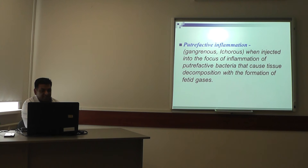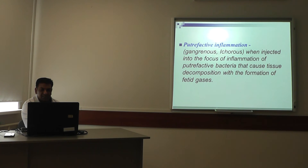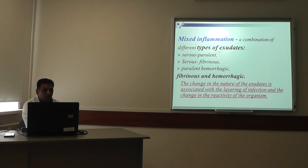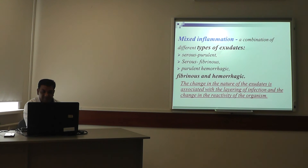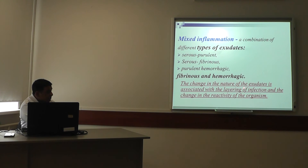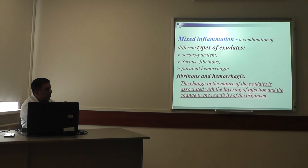Putrefactive inflammation: gangrenous bacteria injected into the focus of inflammation cause tissue decomposition with the formation of fetid gases. Mixed inflammation is the combination of different types of exudation — for example, serous-purulent, serous-fibrinous, and hemorrhagic-fibrinous. Changes in the nature of exudates are associated with the layering of infections and changes in the reactivity of the organism.